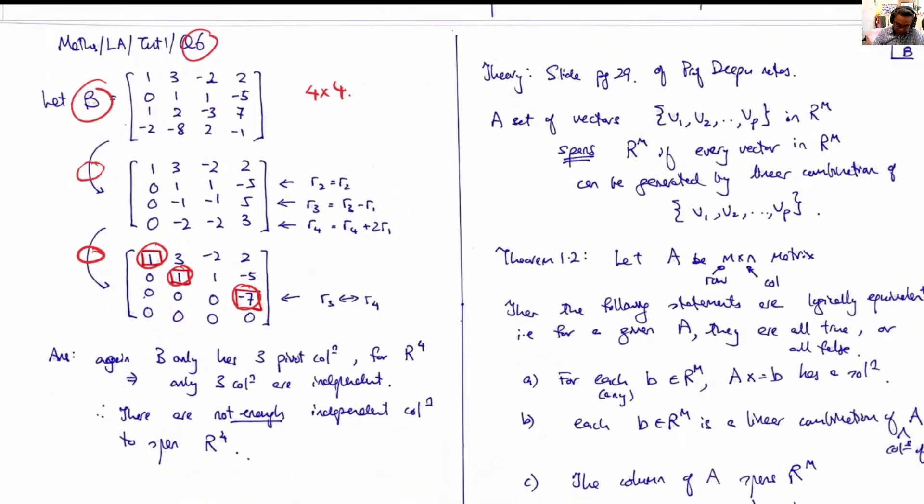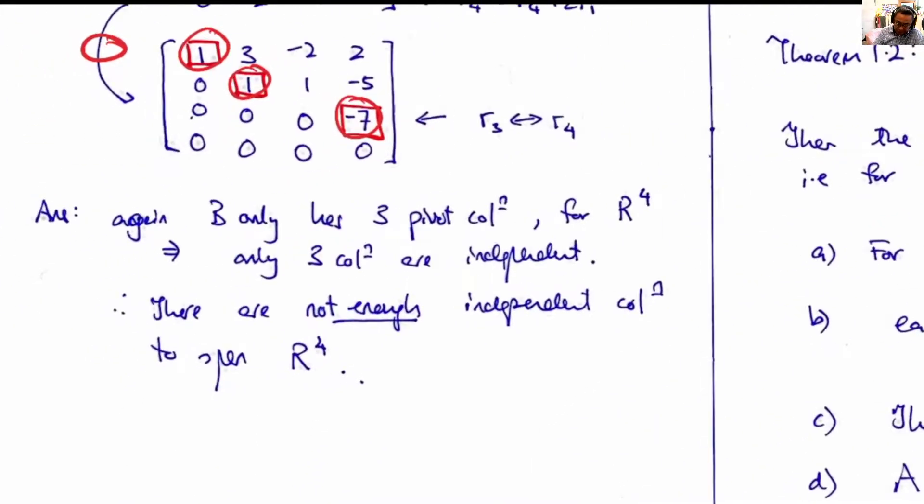Again, we determine the number of pivot positions. Again, we determine that there are only three pivot positions, implying that only three columns of the B matrix are independent. There is one column that is dependent on the other three.